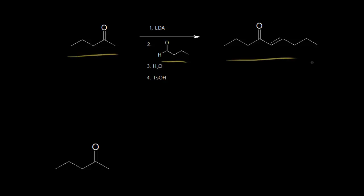So if we do this stepwise, we can do a directed aldol condensation. If we take this ketone and add LDA to it, then add our aldehyde, and in the workup add water and toluene sulfonic acid as an acid source, we can get our conjugated enone in a decent yield. Let's look at each of these steps one by one.